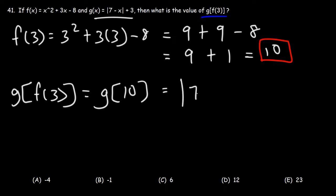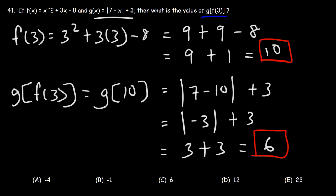So this is going to be the absolute value of 7 minus 10 plus 3. Now, 7 minus 10 is negative 3. The absolute value of negative 3 is positive 3. So this becomes 3 plus 3, which is 6. And so we can say that g(f(3)) is 6. So C is the right answer.